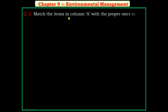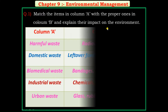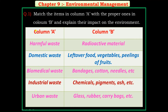Match the item in column A with the proper one in column B and explain the impact on the environment. First question in column A: harmful waste — the answer in column B is radioactive material. Second question in column A: domestic waste — the answer in column B is leftover food, vegetables, peelings of fruits.